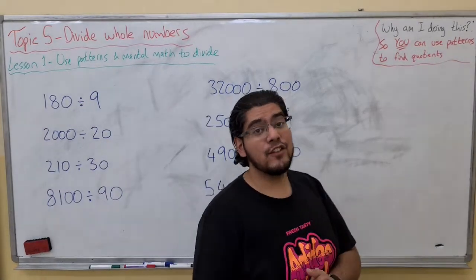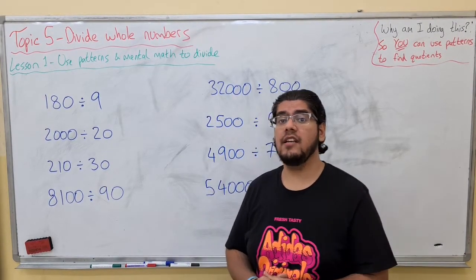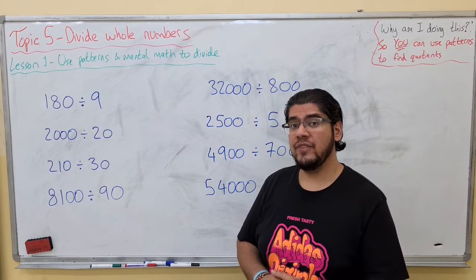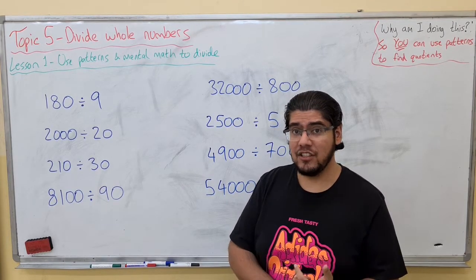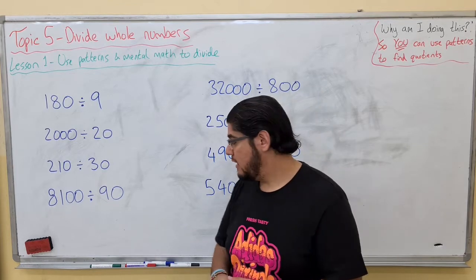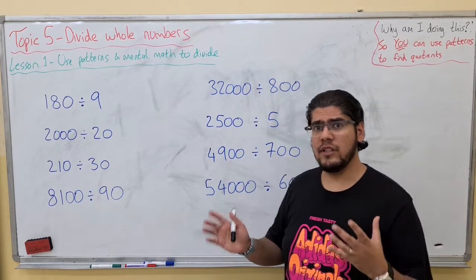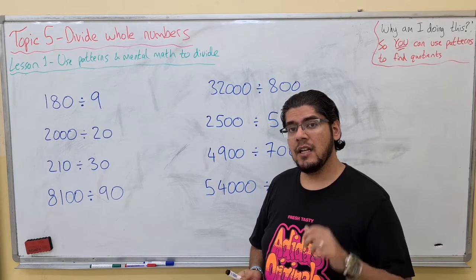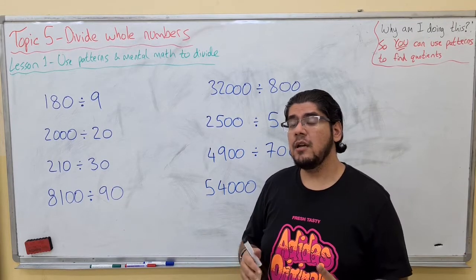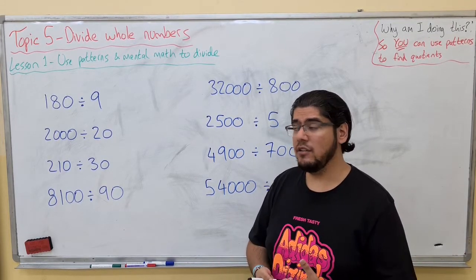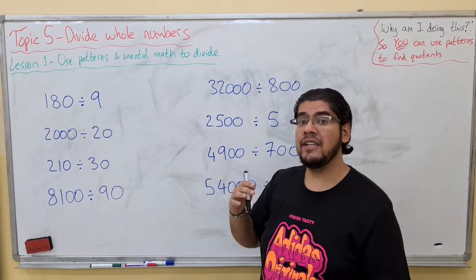Hello everyone. So now for topic 5, we are going to begin dividing numbers. The first part we are going to look at is dividing with zeros. We are going to use patterns and mental math. Now all of these questions might look like really big numbers, but let's break it down — you are going to see that we are just using multiplication patterns, your times tables, and you already know this. The knowledge is already here; we are just going to show you in a different way.